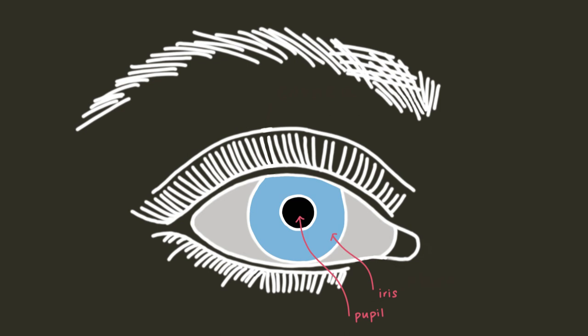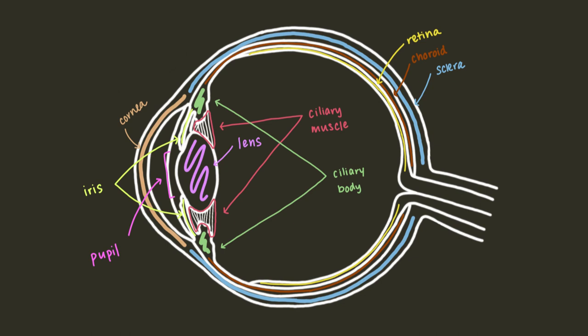To see more structures, we have to look at a sagittal section of the eye, or in other words, we have to look at the eye as if it was cut vertically down the middle. We can now see the choroid, a membrane filled with blood vessels that sustain all the layers of the eye.